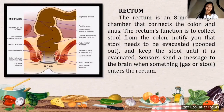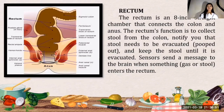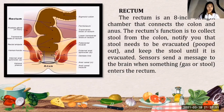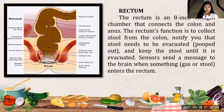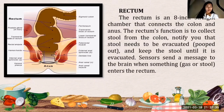Next part is the rectum. The rectum is an 8-inch straight chamber that connects the colon and the anus. Its function is to collect stool from the colon, notify you that stool needs to be evacuated, and keep the stool until it is evacuated. When something like gas or stool enters the rectum, sensors send a message to the brain. The main function of the rectum is to receive stool from the colon, to let you know there is stool to be evacuated, and to hold the stool until evacuation happens.